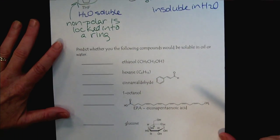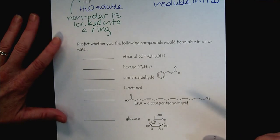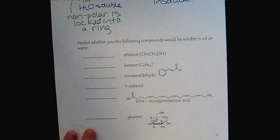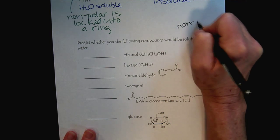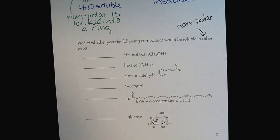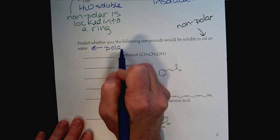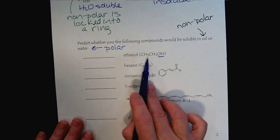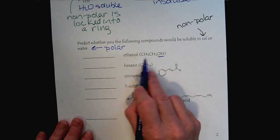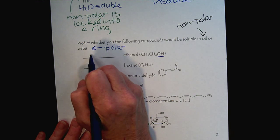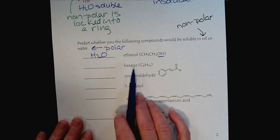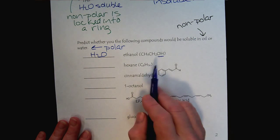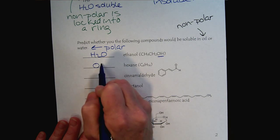For one final wrap-up, let's apply this knowledge to predict whether compounds will be soluble in oil — a very nonpolar solvent — versus water, which is very polar. Ethanol has our NOF, H-bonding, and a very small carbon chain of only two nonpolar carbons, so we predict it to be water soluble. Hexane is all carbons and hydrogens — a nonpolar substance — so it's going to dissolve in oil.